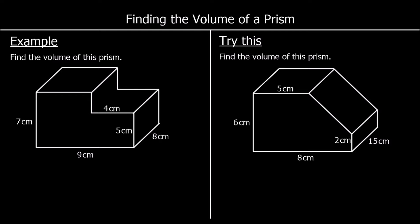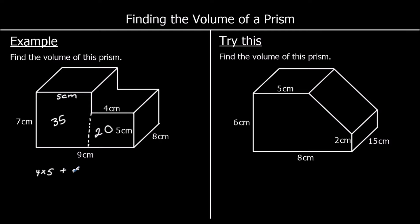Here are some different shapes but we're still following the same steps — find the area of the front and then multiply by how far back it goes. To find the area of the front we can split into two different shapes. We've got two rectangles: a 4 times 5, which is 20. The whole length is 9, and 4 up to here means this must be 5 centimeters. For the second rectangle the area is 7 times 5, which is 35. So we've got 4 times 5 plus 5 times 7, which makes 55 centimeters squared for the area of the front — the area of the cross section.